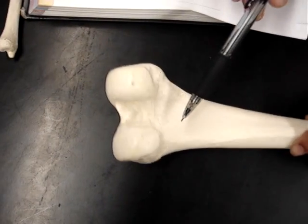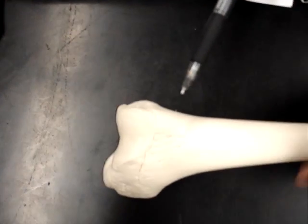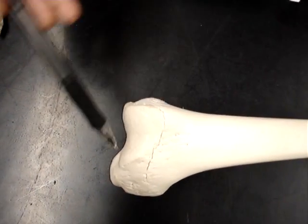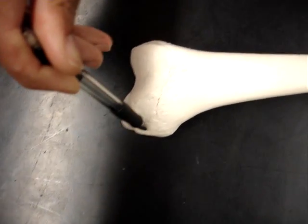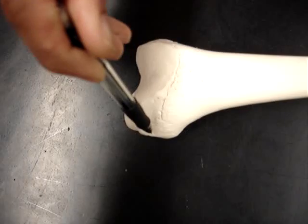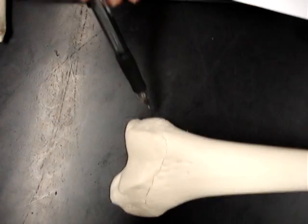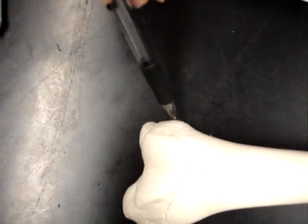Then we go back to the anterior view. And we have the medial epicondyle, because it's on the same side as the head. And this is the lateral epicondyle.